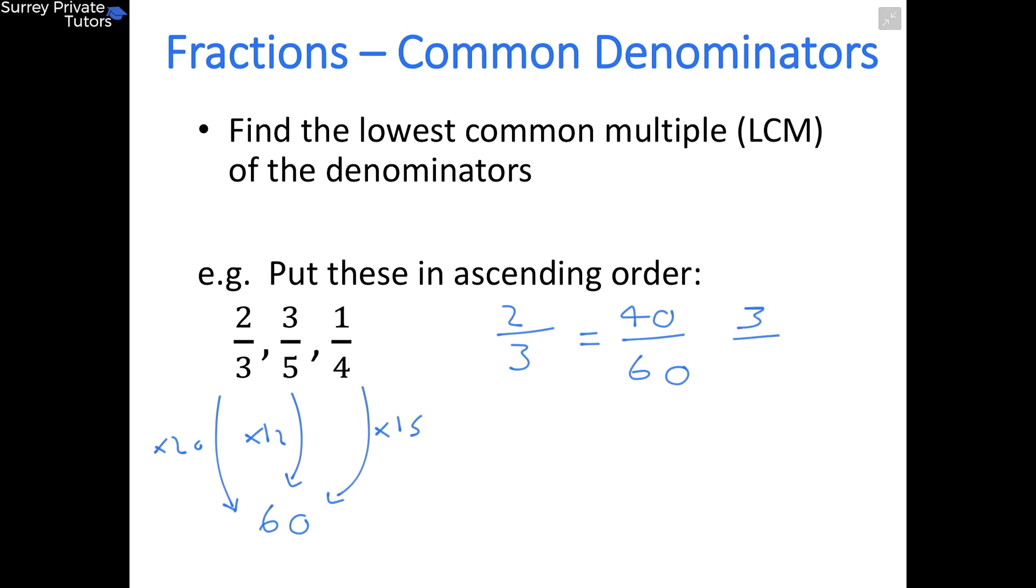And then you want to do exactly the same thing for the other two fractions. So you've got 3 fifths, it will be 60 on the bottom, and then you want to do 3 times 12, so 36. And then you've got 1 quarter, again 60 on the bottom, and your numerator will be 1 times 15, so you get 15 over 60.